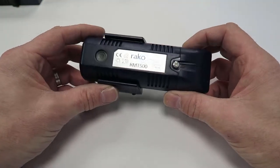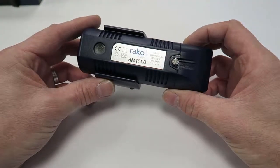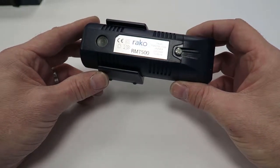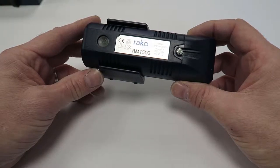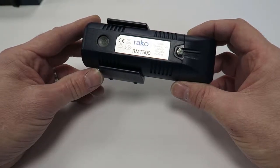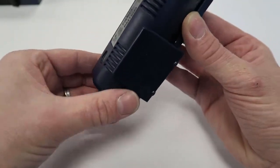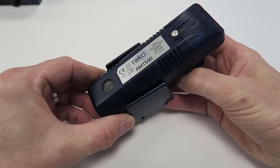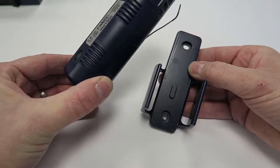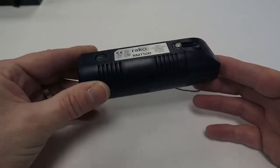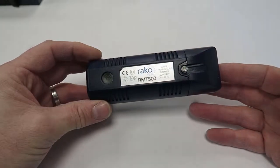This module here particularly, an RMT500, is a trailing edge dimming module which really can replace a driver up in the ceiling. It's kind of designed in that way. This is a bracket here actually, a mounting bracket that you can install onto the wall. But in general, this is pretty much in the same form factor as a driver.